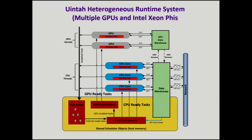Now we have to talk about what happens on each node. We have the data warehouse plus a bunch of CPU cores which independently go and grab tasks and get data from the data warehouse. The MPI interface to the network is done through the data warehouse. The GPUs or Xeon Phis have their own data warehouses. There are task queues which tell us which tasks are ready, and then CPUs or GPUs can pick off either CPU tasks or GPU tasks and execute them. We keep a localized task graph for each patch — there's no global task graph anywhere.